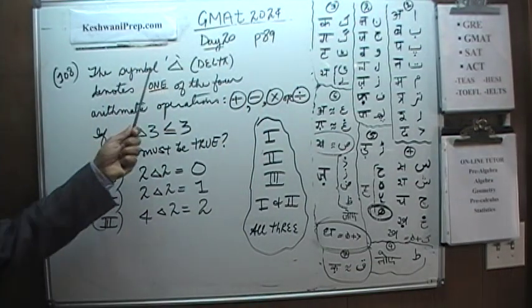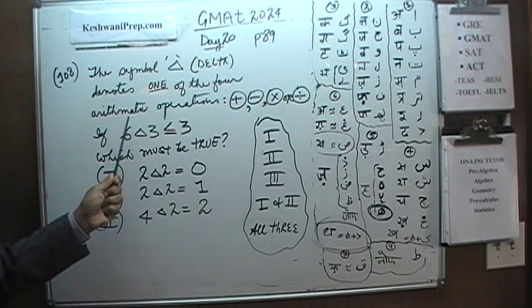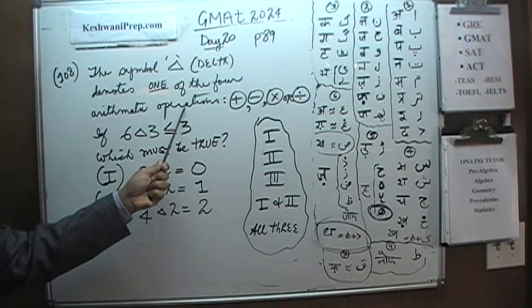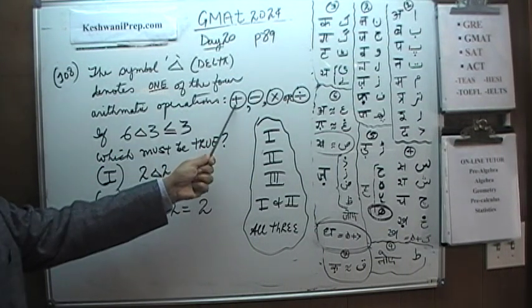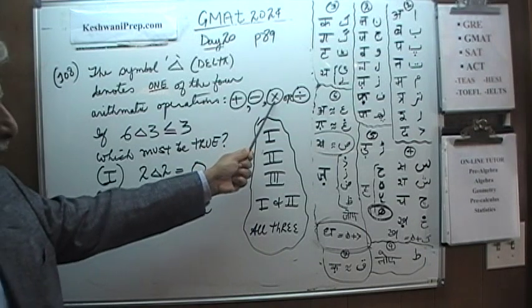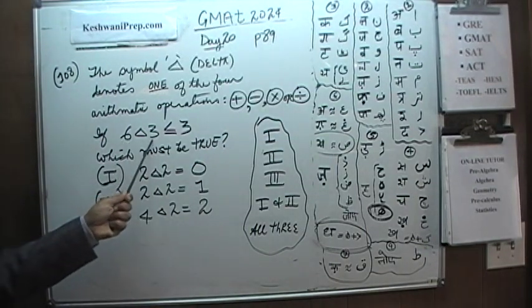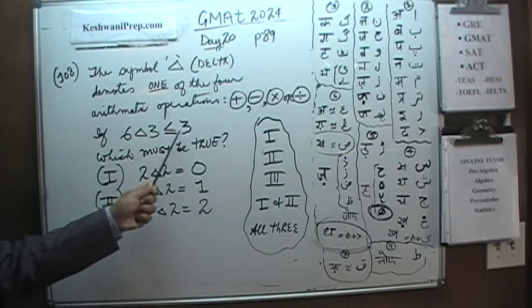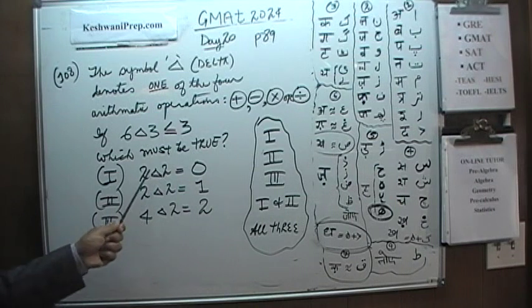It says the symbol, this symbol right here which is called delta, this symbol denotes one of the four arithmetic operations. They don't tell us which one but they tell us it denotes one of these four basic arithmetic operations, addition, subtraction, multiplication and division.